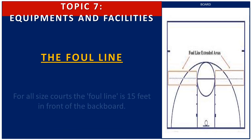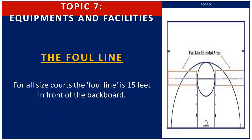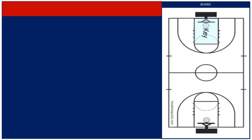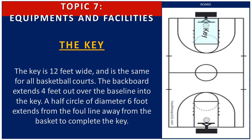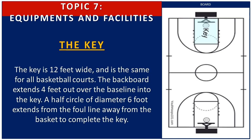The foul line is 15 feet in front of the backboard for all court sizes. The key is 12 feet wide and is the same for all basketball courts. The backboard extends 4 feet out over the baseline into the key, and a half circle of 6-foot diameter extends from the foul line away from the basket to complete the key.